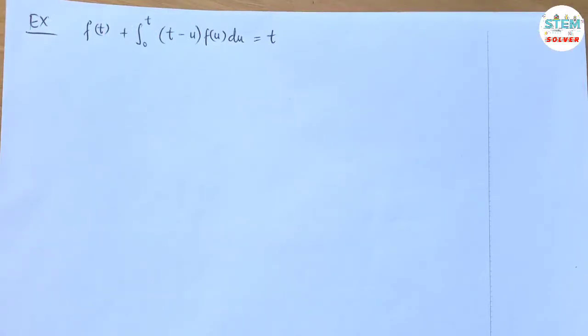Find the Laplace transform of f(t) plus the integral from 0 to t, t minus u, f(u) du equals t. So for this one, as you can see...